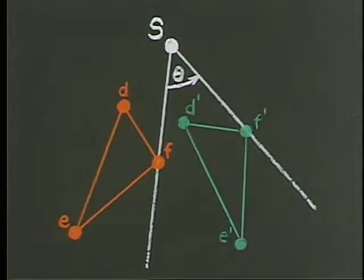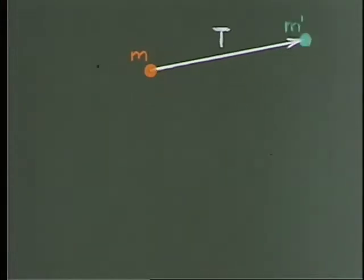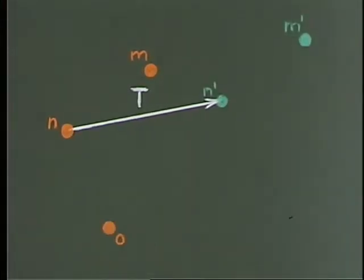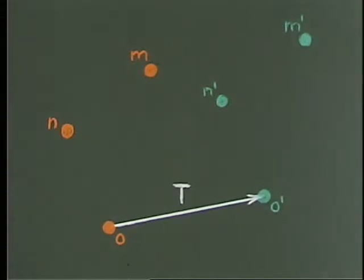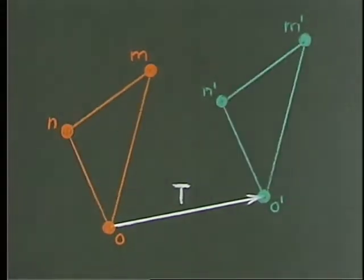A translation has the same sort of properties. Think of the entire plane as sliding. For every initial point, there is a final point. It's this correspondence which I call a translation. It preserves distance. It's one-to-one.